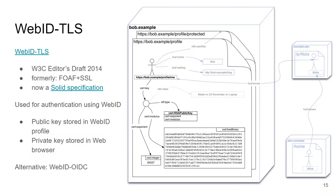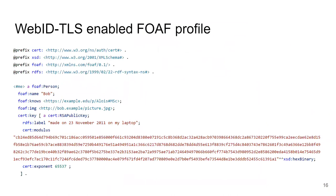WebID-TLS takes advantage of asymmetric cryptography — public and private key pairs. Your public key is stored directly in your WebID profile on the web, so when someone accesses your WebID they get your full profile including your public key. Your private key is stored in your web browser. Your profile may then include a name, a foaf:knows relation, an image, and a public key.